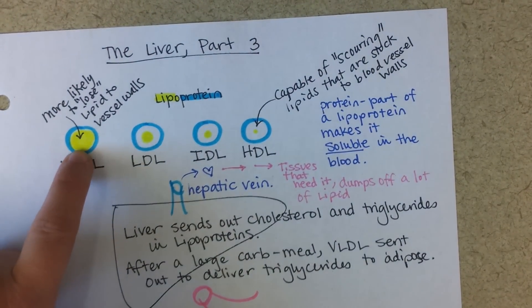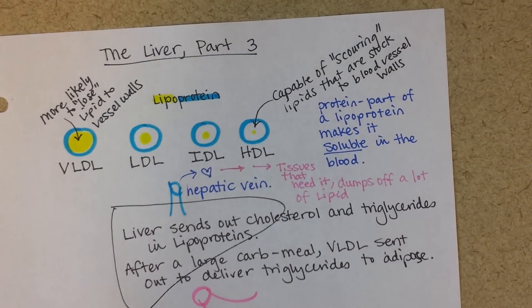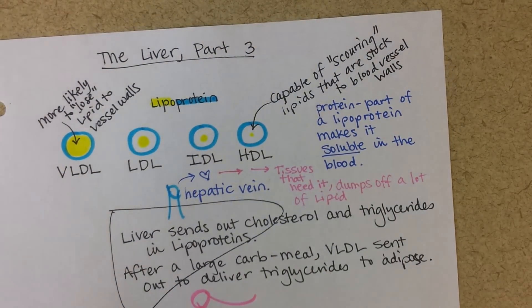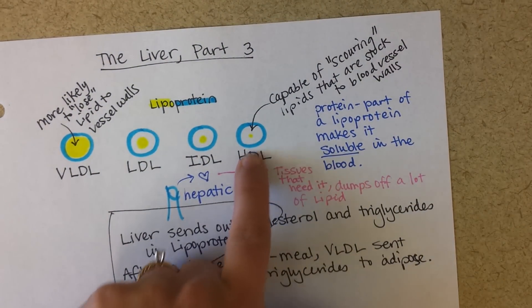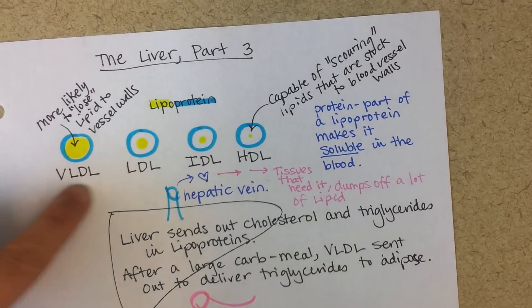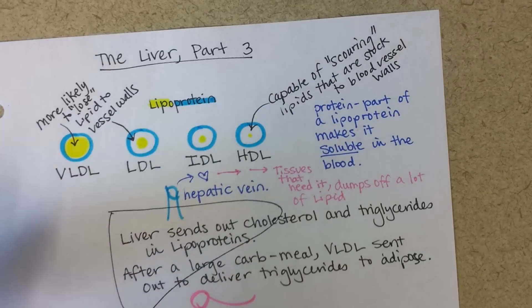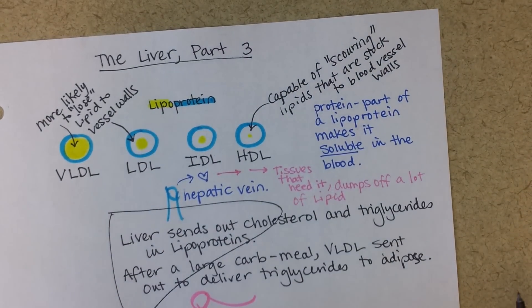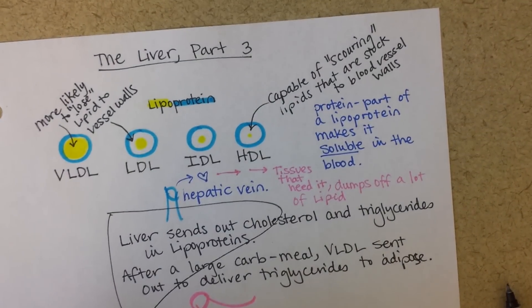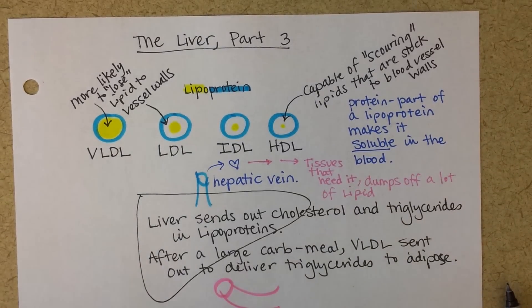HDLs scavenge lipids from vessel walls and bring them back to the liver. On the other hand, very low density lipoproteins appear more likely to lose lipid to vessel walls — they're so filled they're basically splitting at the seams and small fat droplets can stick to blood vessel walls. This is where the idea comes from that high HDL lowers your risk for heart disease, while a high proportion of VLDLs and LDLs may increase heart disease risk. However, the jury is still out — it's a confusing topic, and you should be cautious about assuming all LDLs are bad or all HDLs are good.